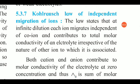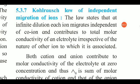Kohlrausch's law of independent migration of ions states that at infinite dilution, each ion migrates independently of its co-ion and contributes to the total molar conductivity of an electrolyte, irrespective of the nature of the other ion. For example, a strong electrolyte like NaCl dissociates into Na⁺ and Cl⁻ ions.